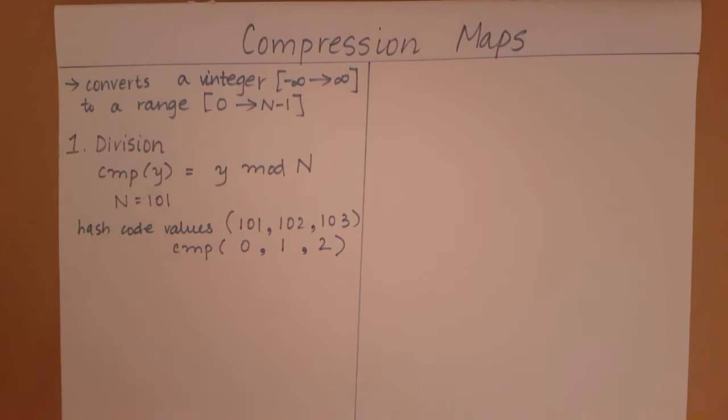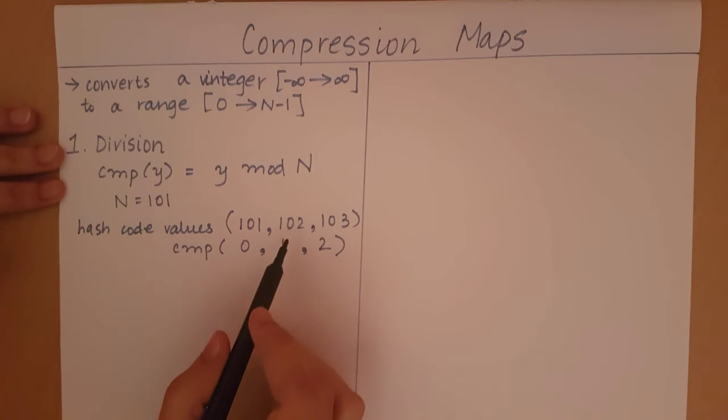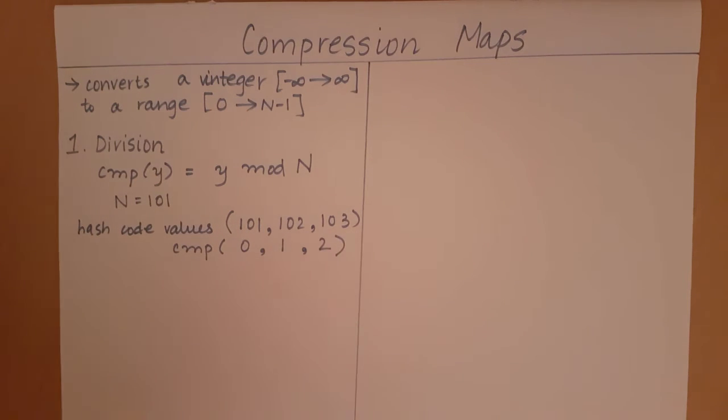Now n is typically taken as a prime number. This is because it's going to reduce the probability of collisions. So 101 maps to 0, 102 maps to 1, 103 maps to 2.